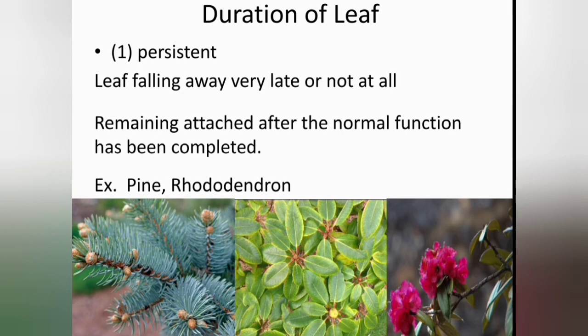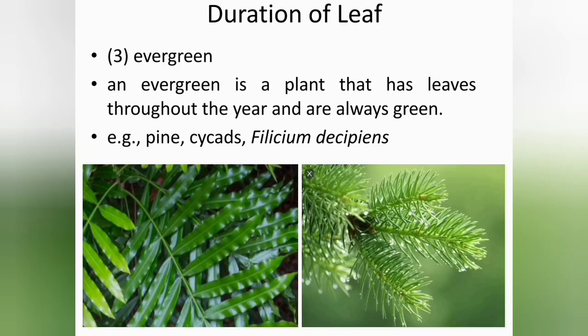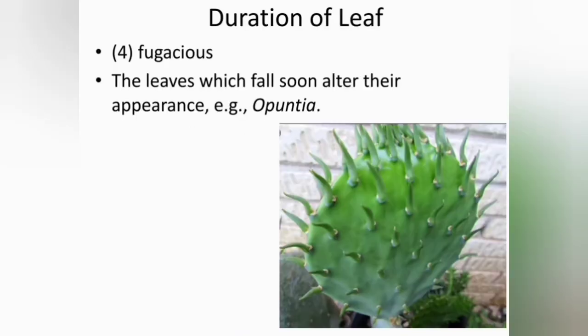Persistent leaves are leaves falling away very late or always present, remaining attached after normal function has been completed. Deciduous leaves fall off at the time of maturity; they lose their foliage in the autumn season and grow new leaves in the spring. They include oaks, maple and beeches. An evergreen is a plant that has leaves throughout the year and is always green — e.g., pine, cycads, Phyllanthus dissipans. Fugaceous leaves fall soon and alter their appearance. E.g., Opuntia.